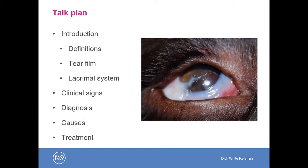In terms of the talk plan, I'm going to give a little bit of introduction first, some definitions, and talk about the tear film and the lacrimal system, which are important when we think about dry eye. I'm then going to go on to talk about the clinical signs of dry eye, its diagnosis — which is not quite as simple as the Schirmer tear test — the main causes of dry eye, and the treatment, concentrating on medical aspects.